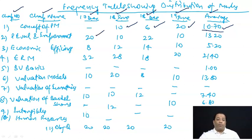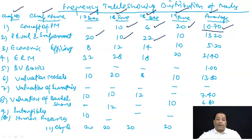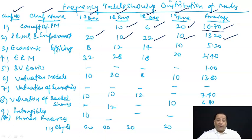दूसरा chapter: performance evolution and improvement। 17 December में 20 marks, 18 June में 10 marks, 18 December में 22 marks, 19 June में 10 marks — and on an average, 13.20 marks। यह second chapter बहुत relevant है। Paper तो 100 marks का है, लेकिन जो performance management की बात करें — first part 50 marks का — उसका approximately one-fourth part performance evolution and improvement cover करता है।